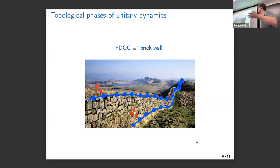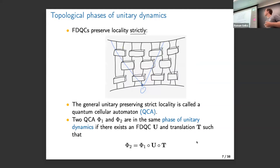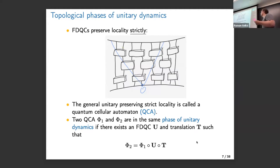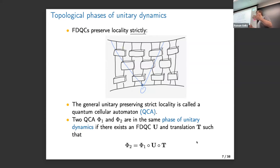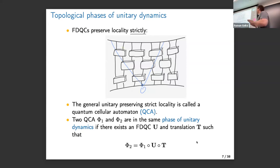I will often refer to finite depth quantum circuits as brick walls. One of the key properties of FDQC — brick walls — is that they preserve the locality of operators strictly. If I take an operator supported on a single site and evolve it with the FDQC, I obtain an operator supported on some finite number of sites with no exponential tails. This is what is meant by strict locality.